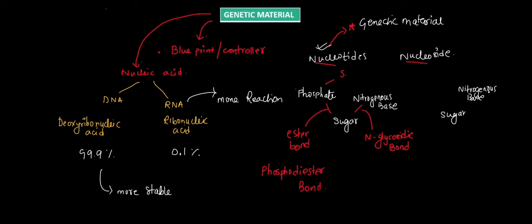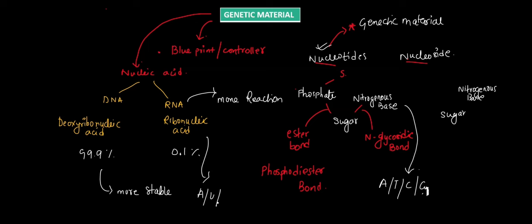Talking about the nitrogenous bases: DNA has adenine, thymine, cytosine, and guanine. Whereas RNA has adenine, uracil (in place of thymine), cytosine, and guanine. This is a very important difference — DNA has thymine whereas RNA has uracil. This is one of the reasons why RNA is more reactive than DNA.